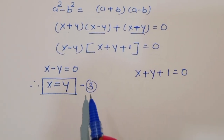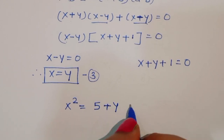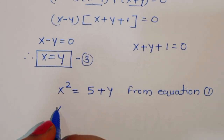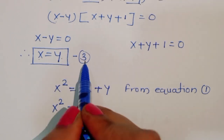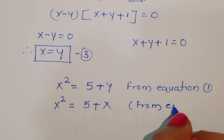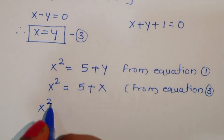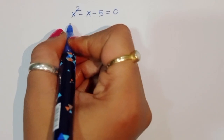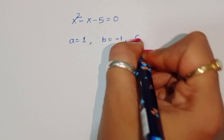From equation 1, x² = 5 + y. Since x = y from equation 3, we substitute y with x, giving x² = 5 + x. Rearranging: x² - x - 5 = 0. Here the coefficients are: a = 1, b = -1, and c = -5.